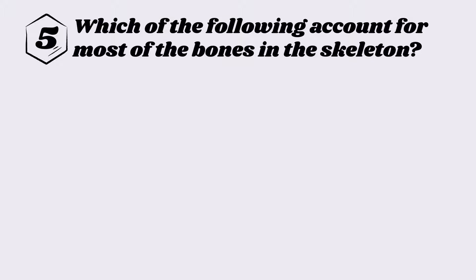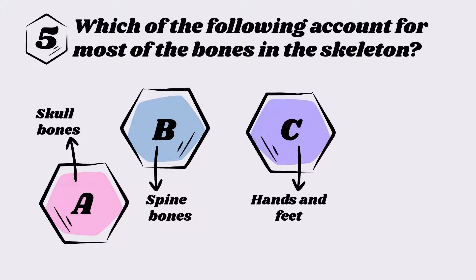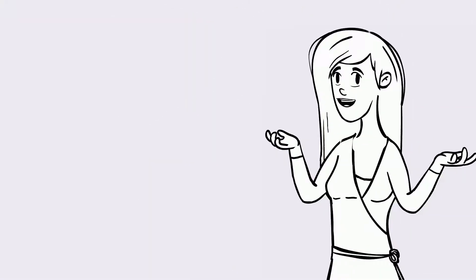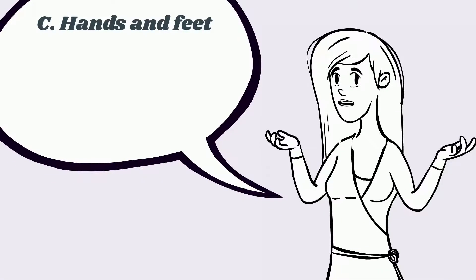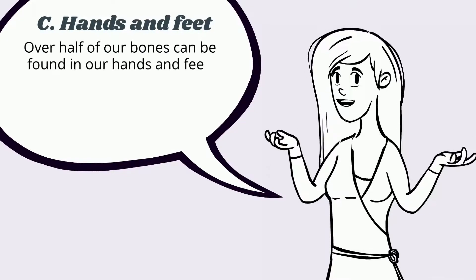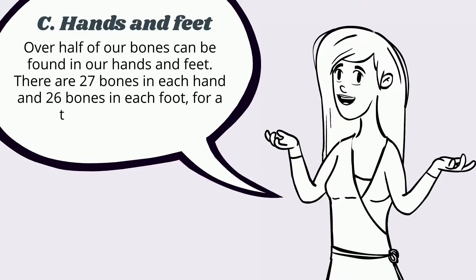Question five: Which of the following account for most of the bones in the skeleton? A) The skull bones, B) The spine bones, C) The bones in your hands and feet, D) The bones in your thorax. The answer is C, hands and feet. Over half of our bones can be found in our hands or feet. There are 27 bones in each hand and 26 bones in each foot, for a total of 106 bones.